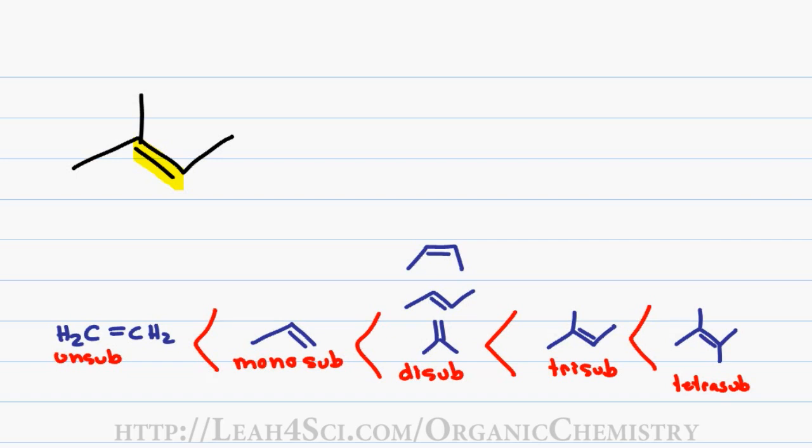For the highlighter trick, simply highlight the pi bond on your molecule and then circle any carbons or any groups that directly come off of that pi bond. On this molecule we have this group here, another top left and another bottom. This means I have a tri-substituted molecule.